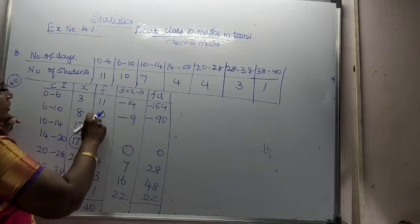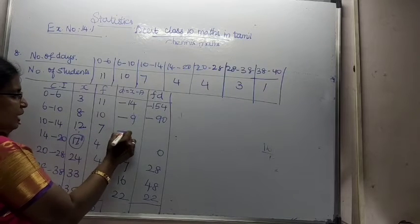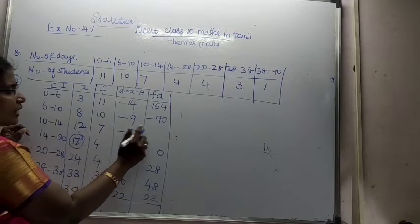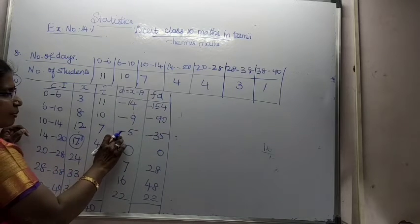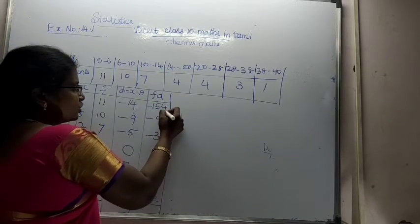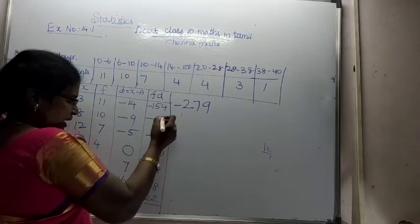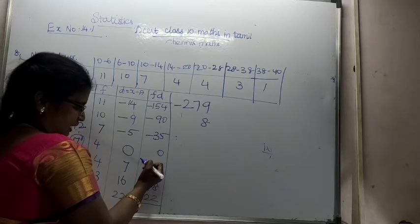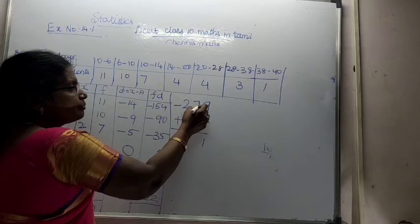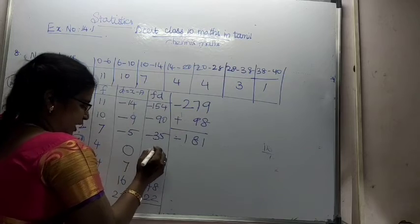Now let me add these: minus 154, minus 90, minus 35, 0, 28, 48, 22. Calculating the sum step by step: minus 154 minus 90 gives minus 244, minus 35 gives minus 279, plus 28 gives minus 251, plus 48 gives minus 203, plus 22 gives minus 181. The summation of FD is minus 181.